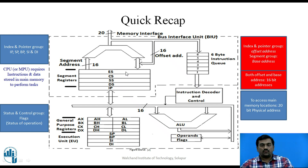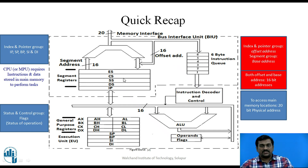The 8086 microprocessor internally uses 14 sixteen-bit registers to store data. These registers are divided into four groups: general purpose registers AX, BX, CX, and DX; segment registers — Extra Segment (ES), Code Segment (CS), Stack Segment (SS), and Data Segment (DS); and the index and pointer group containing Instruction Pointer, Stack Pointer, Base Pointer, Source Index, and Destination Index registers. The index and pointer registers usually contain the offset address, while the segment registers contain the base address. Both addresses are 16-bit in nature. There is also a 16-bit flag register which shows the status of operations performed by the ALU.